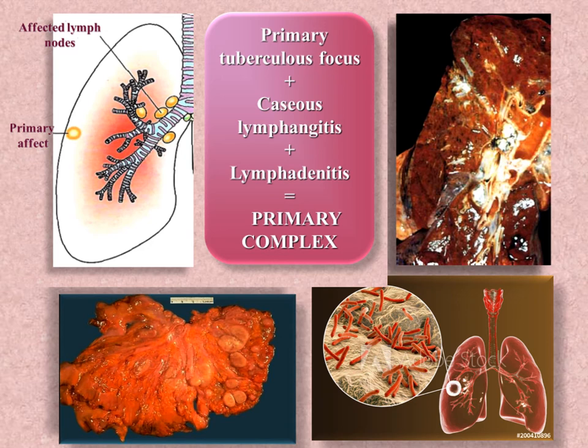The three components are: the primary tuberculosis focus (primary affect), caseous lymphangitis, and lymphadenitis. The primary affect is a focus of 1–2 cm where bacilli enter the tissue, usually in the 3rd, 8th, 9th, and 10th subpleural segments, near the mid-zone of the right lung.